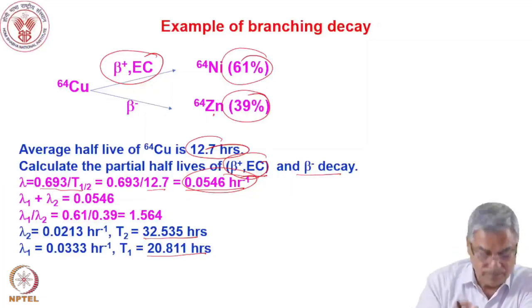What we discussed today was radioactive decay, different types of decay — including decay of a mixture of radioisotopes and branching decay into different modes like beta-plus and beta-minus. In the next lecture I will discuss the radioactive decay chain and the growth and decay of daughter products. Thank you very much.